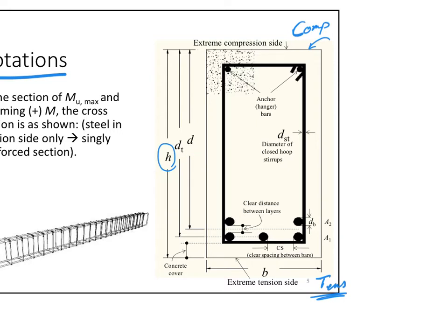The distance from the extreme compression fibers to the centroid of all the steel layers is d, a very important factor. If I have a layer of four bars and above it a layer of two, the centroid of all of them shifts toward the layer of four, but for simplification we take the midpoint between all layers. With two layers, d is at the midpoint; with three layers, it falls on the middle layer.